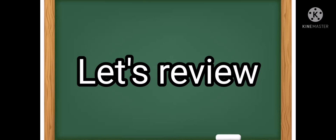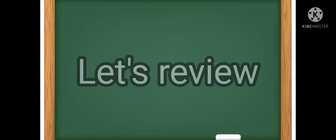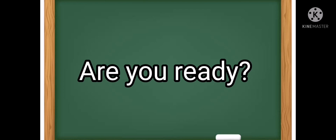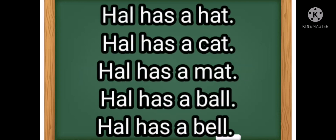Before we begin our new lesson, let us review what we learned from our previous lesson. Teacher Josh will read the poem again and after, you have to repeat after me. Are you ready? Okay, let's begin. Hal has a hat. Hal has a cat. Hal has a mat. Hal has a ball. Hal has a bell.